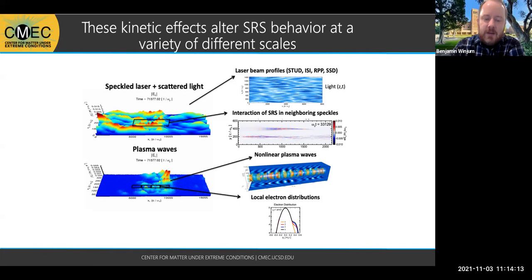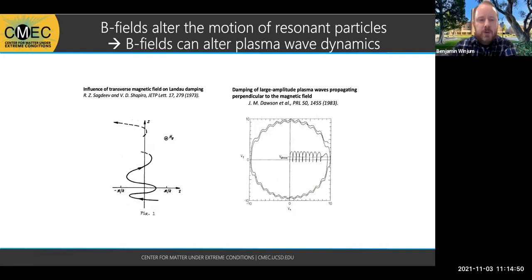It also complicates things that you get a variety of behaviors at different spatial scales, from the spatial modulation of the laser — which is tried to be smoothed by various laser smoothing techniques — to neighboring speckles interacting with each other by sending waves and particles between them. Even on the scale of the plasma wave wavelength itself, you get these nonlinear effects and localized electron distribution functions with hot tails which modify the damping and frequency of the wave. When you introduce a magnetic field, it alters the motion of resonant particles and can thereby surprisingly alter the plasma wave dynamics and the dynamics of stimulated Raman scattering.